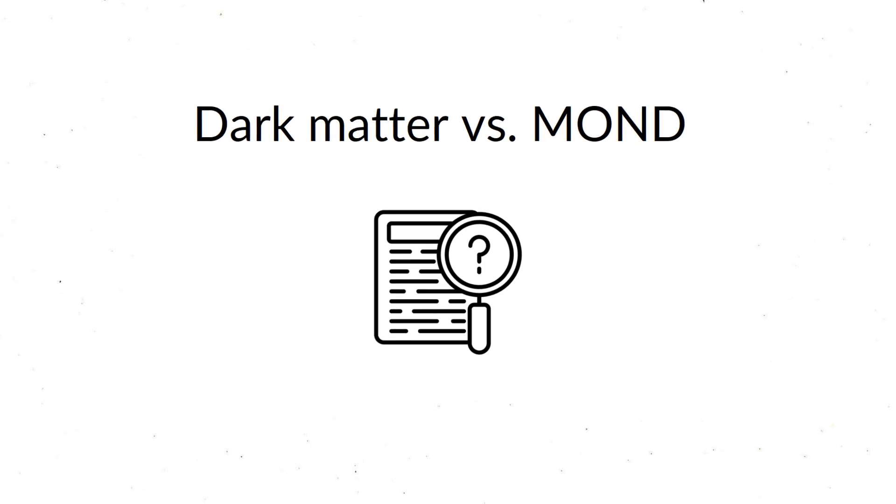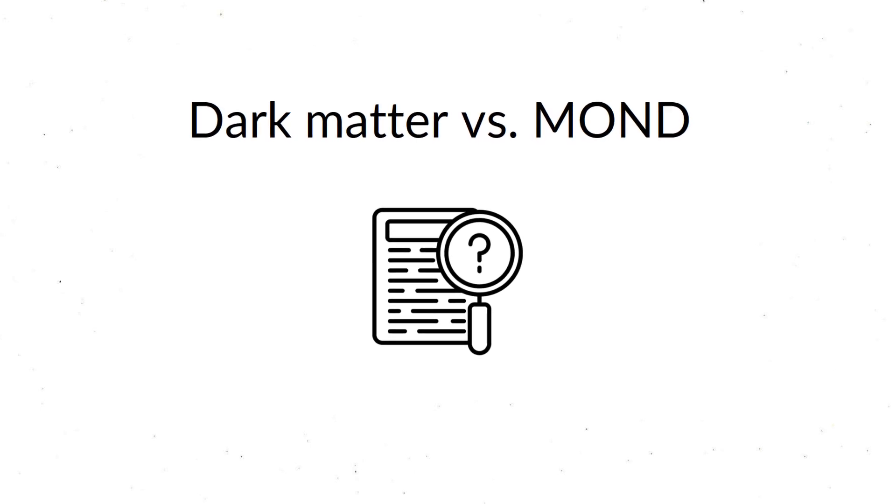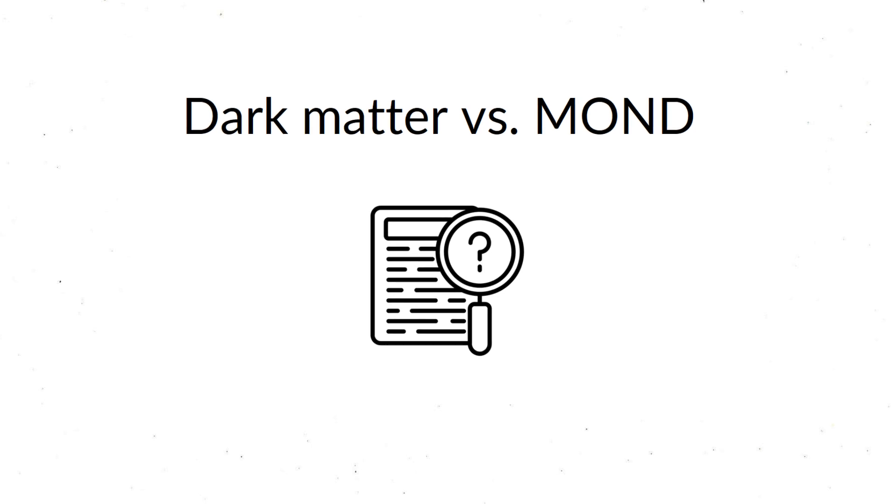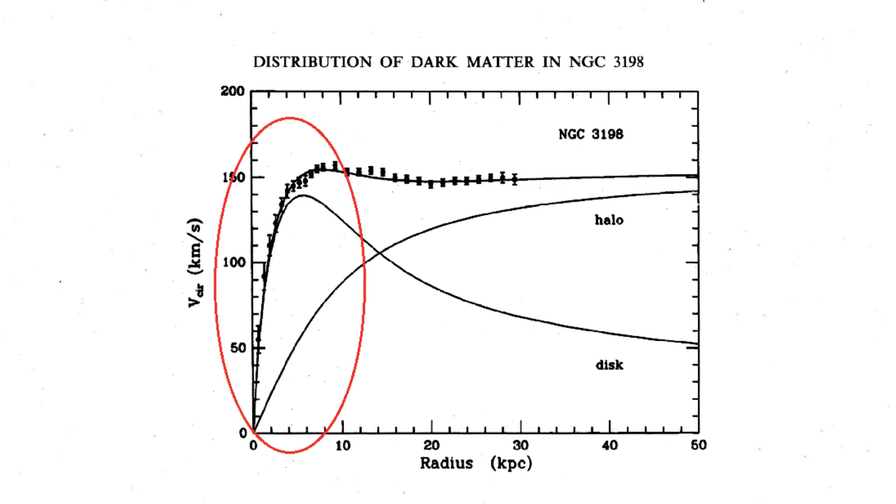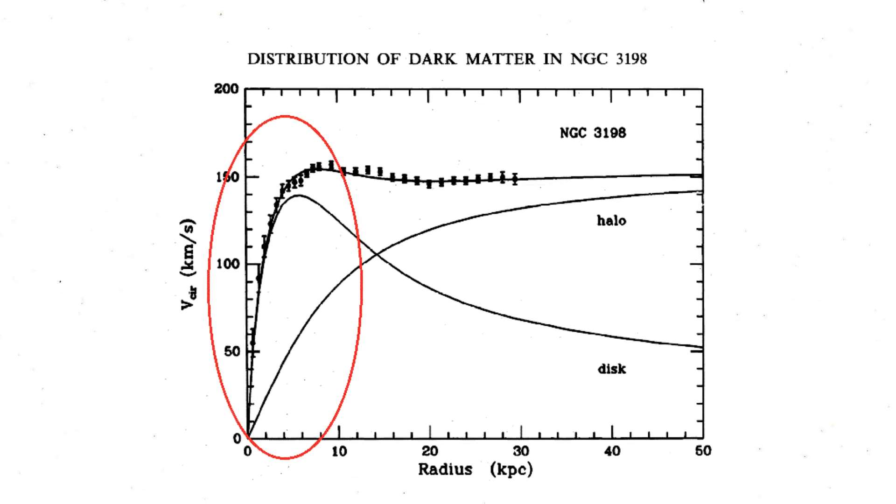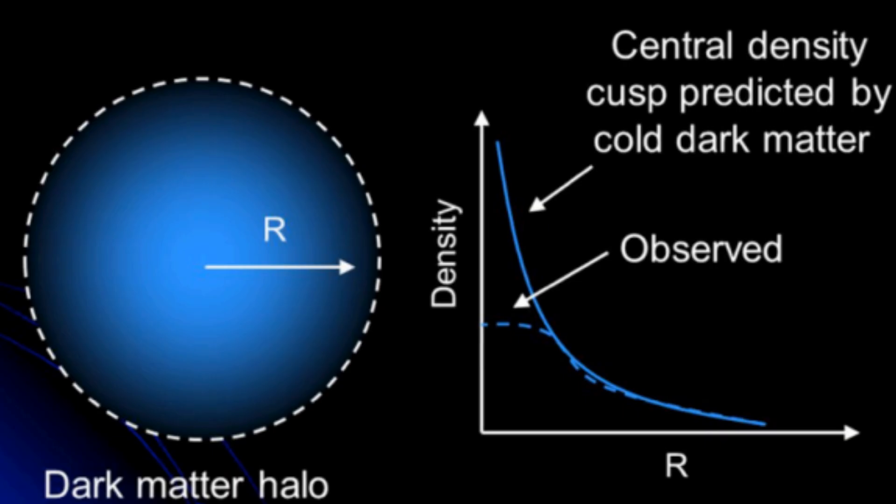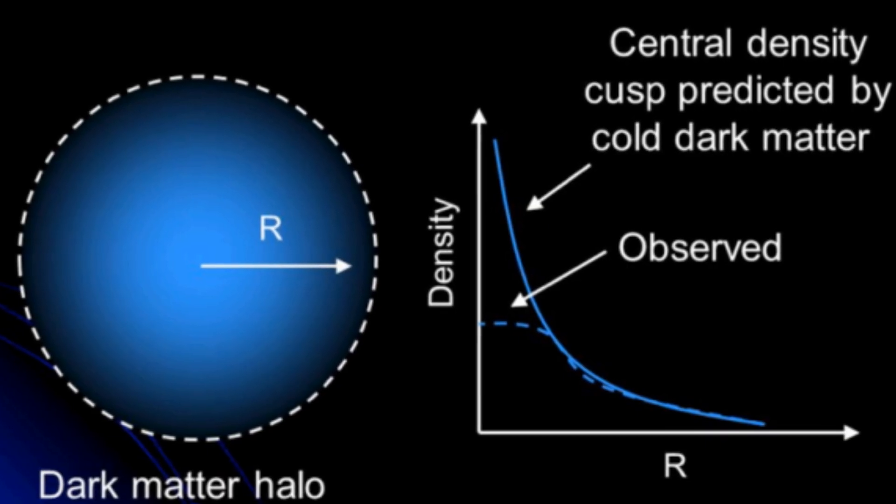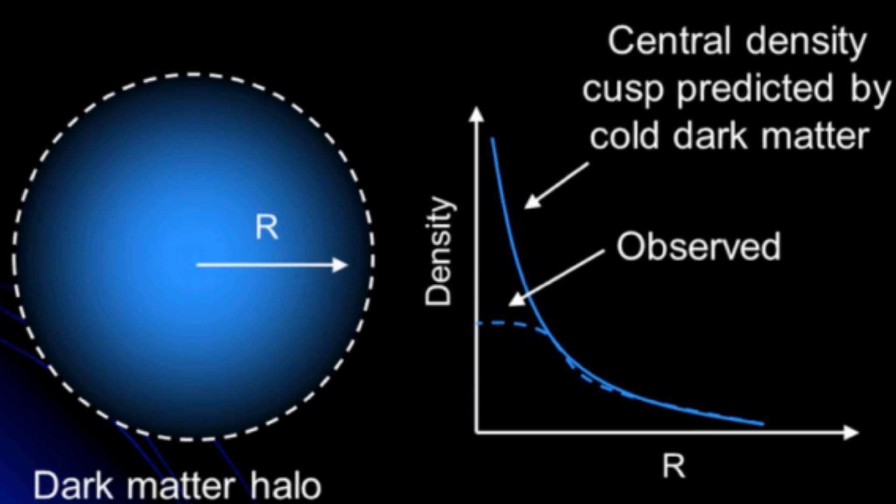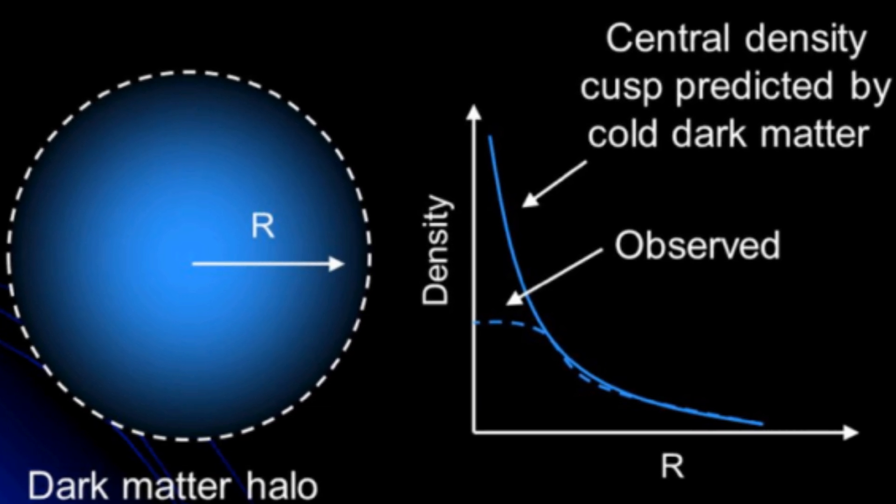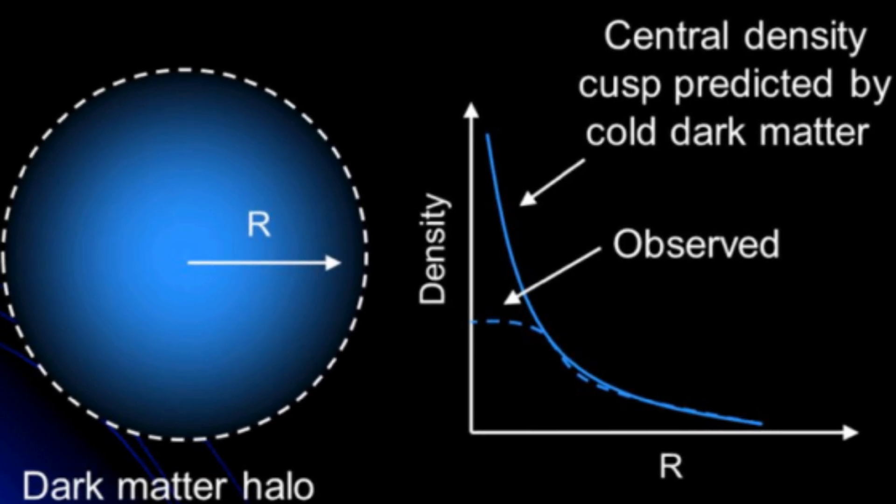Evidence in favor of MOND, in contrast to physical dark matter, is found in several observations. Galactic rotation curves exhibit no mass discrepancy at their interior, which is very difficult to explain with physical dark matter, which should clump together and exist in larger amounts in the center of galaxies.